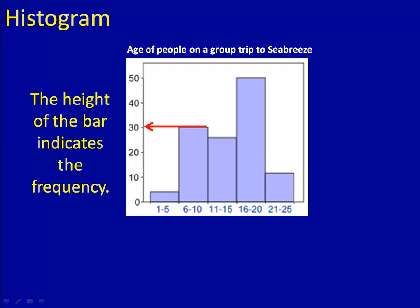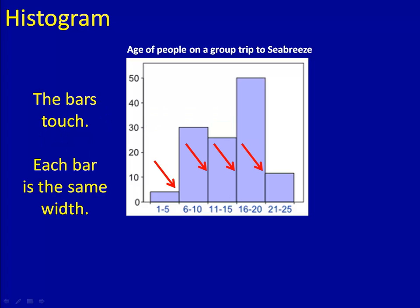The height of each bar indicates the frequency. In this case, the number of people who were that age. Because the second bar, the bar over 6 to 10, goes up to 30, it means there were 30 people who are ages 6 to 10. Finally, make note that each of the bars touch. There is no space between the bars and each bar is the same width. We should construct our histograms very carefully so that they're accurate.